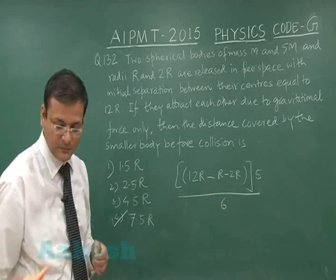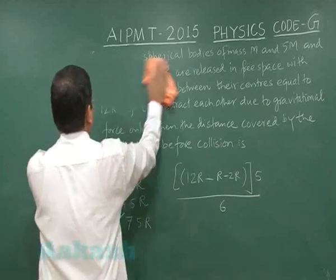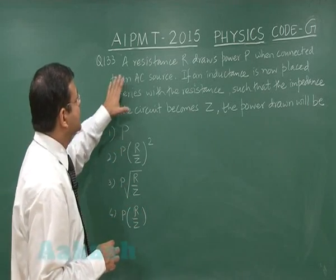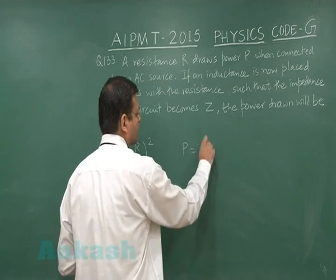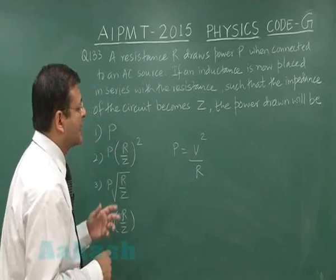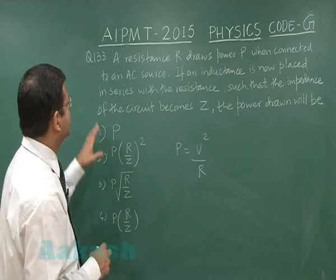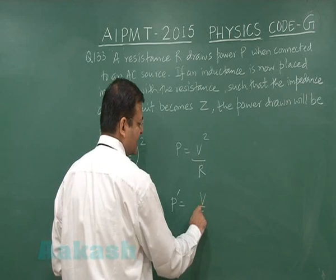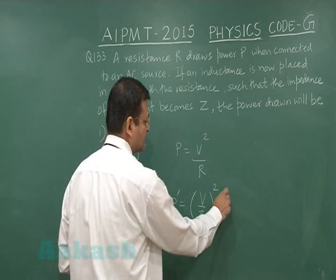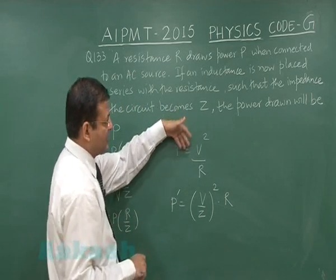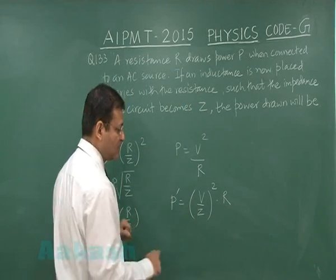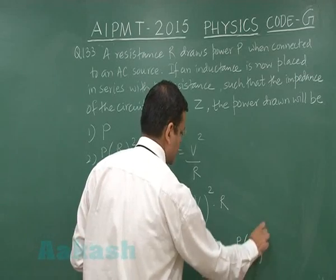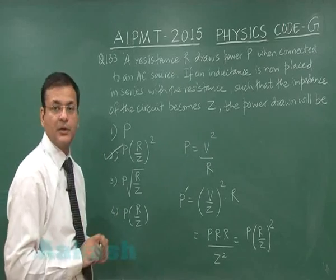Question 133 is related to power consumption in an alternating current circuit. A resistance R draws power P, so you can write P = V²/R. If an inductance is now placed in series with the resistance such that the impedance of the circuit becomes Z, the new power is (V/Z)² × R, which is i_rms² × R. Since V² = P·R, substituting gives new power = P·R²/Z², making option 2 the correct answer.